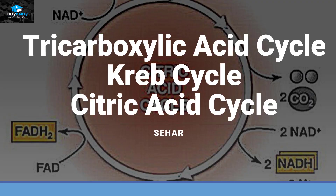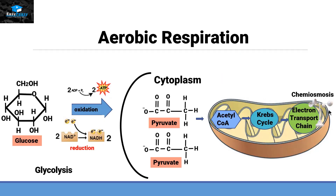Hello friends, this is Seher from Easy Peasy, and the topic we are going to discuss today is called the tricarboxylic acid cycle. This cycle has three different names — it is also called the Krebs cycle or the citric acid cycle. This cycle is the third step of aerobic respiration.